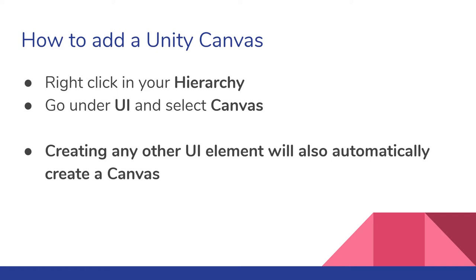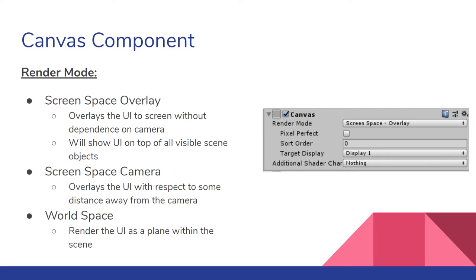When you create a canvas, it comes with a couple of components. The first is the canvas component, which controls how everything scales depending on screen. The key thing is the render mode — this changes how the canvas is shown on screen. The default is Screen Space Overlay, which means the UI is always plastered onto the screen regardless of where the camera is or what it's doing. It's independent of all cameras.